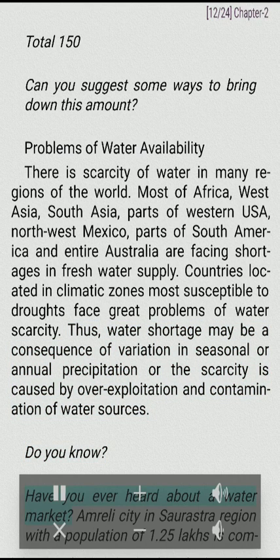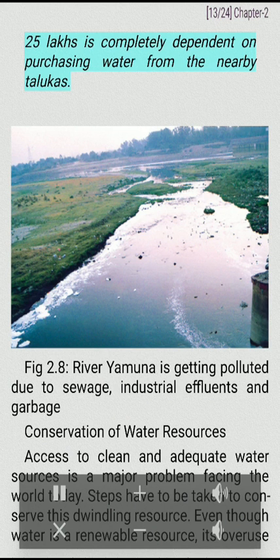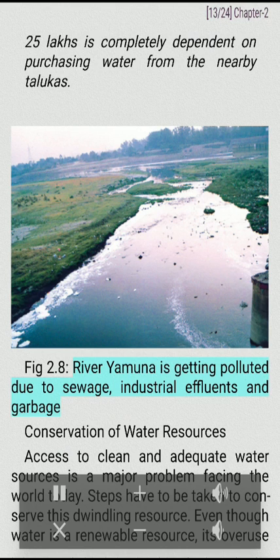Have you ever heard about a water market? Amaralee City in Sorastra region with a population of 1.25 lakhs is completely dependent on purchasing water from the nearby Talukas. River Yamuna is getting polluted due to sewage, industrial effluents and garbage.